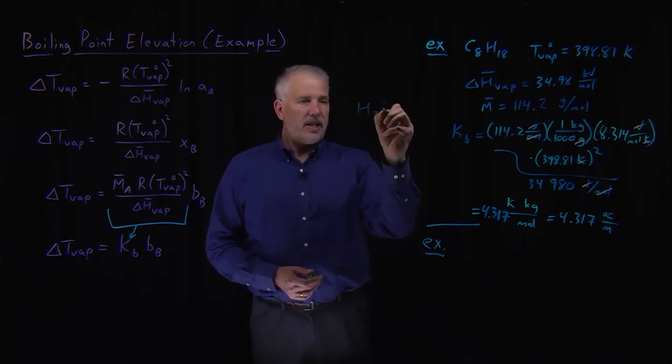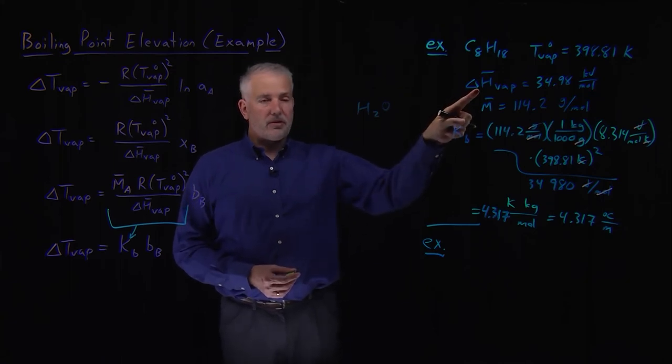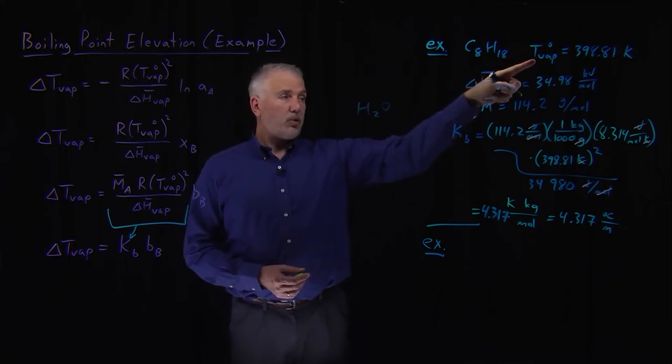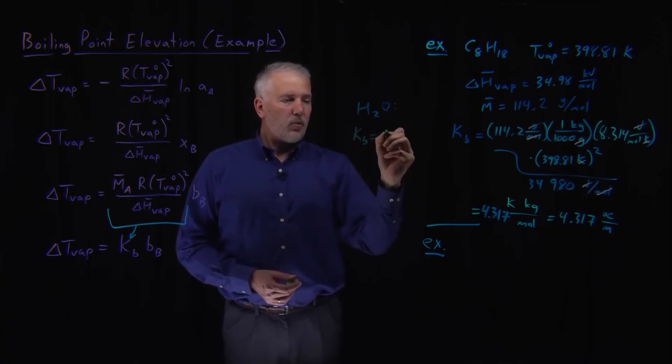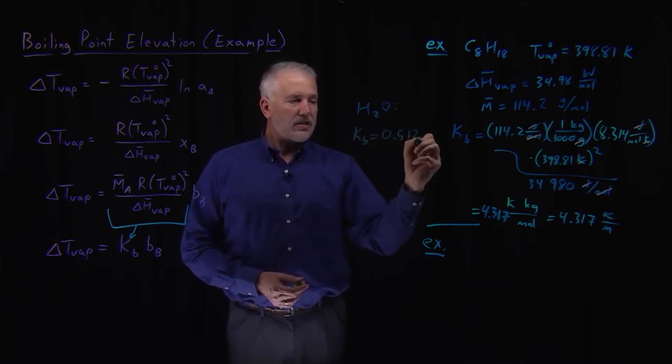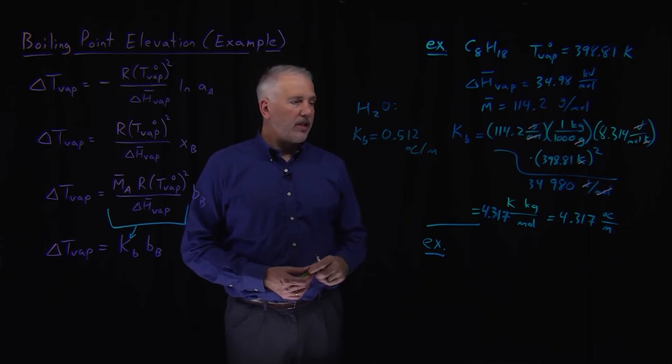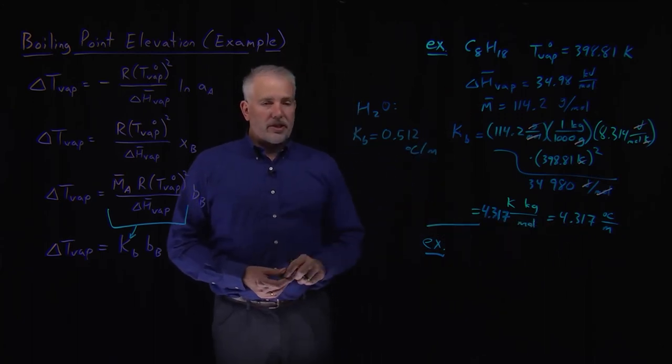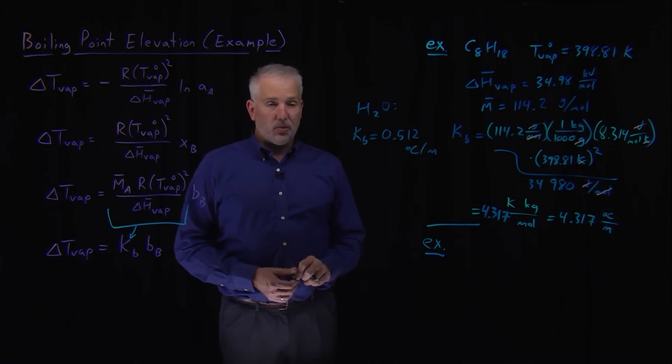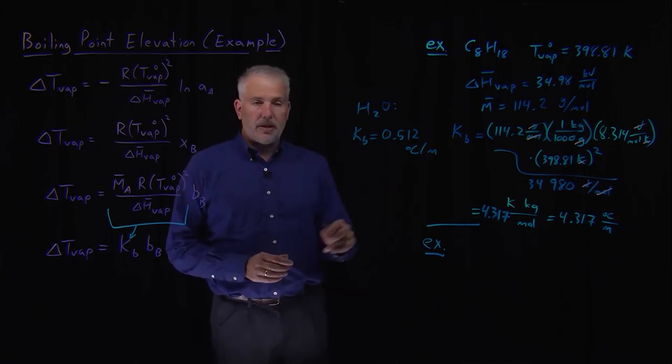For example, in H2O, if we were to repeat this calculation using the enthalpy of vaporization for water and its boiling point and its molar mass, we're going to get a different value. Water, for example, only increases its boiling point by half a degree Celsius per one molal of solution that I prepare. So octane has a significantly higher boiling point elevation constant. Its boiling point changes more when we increase the concentration. So that's mainly a property of the solvent.